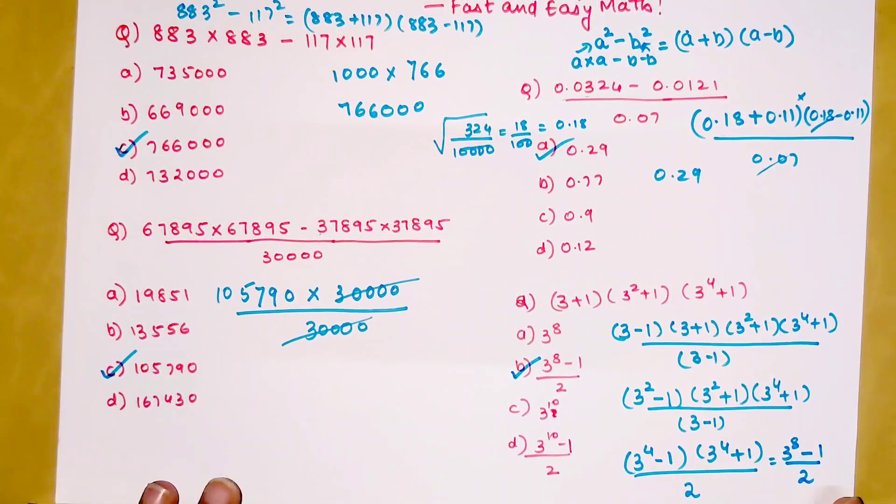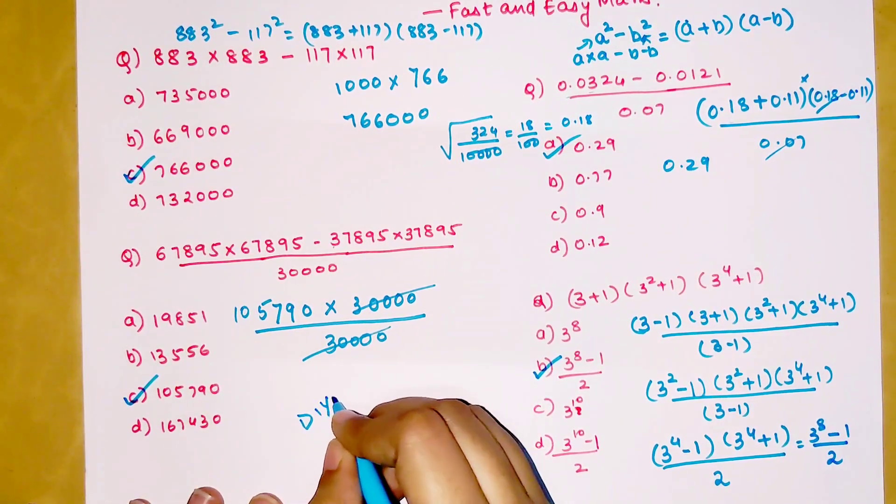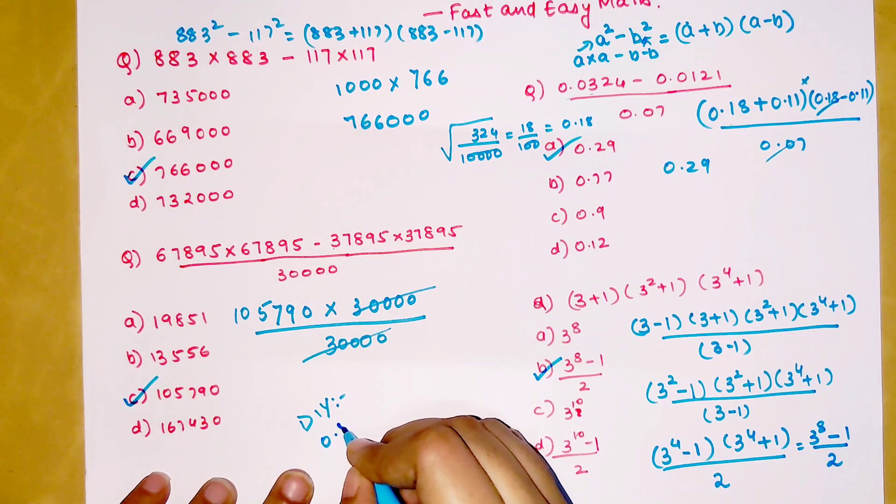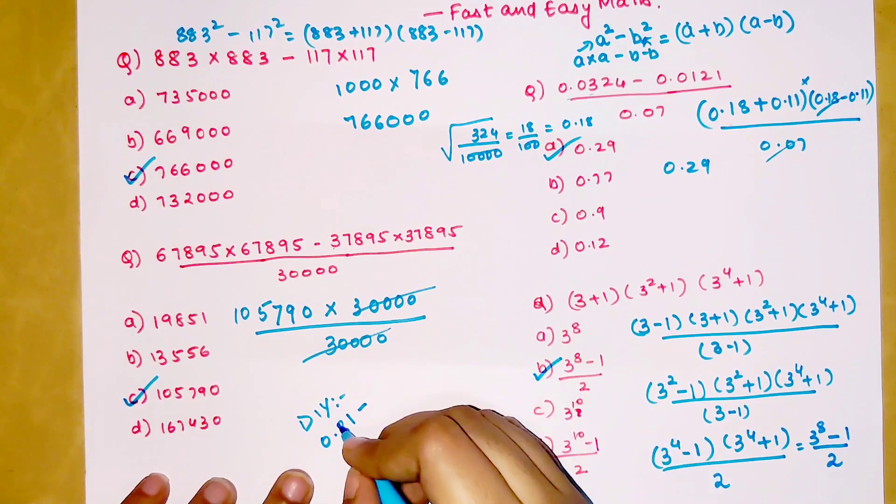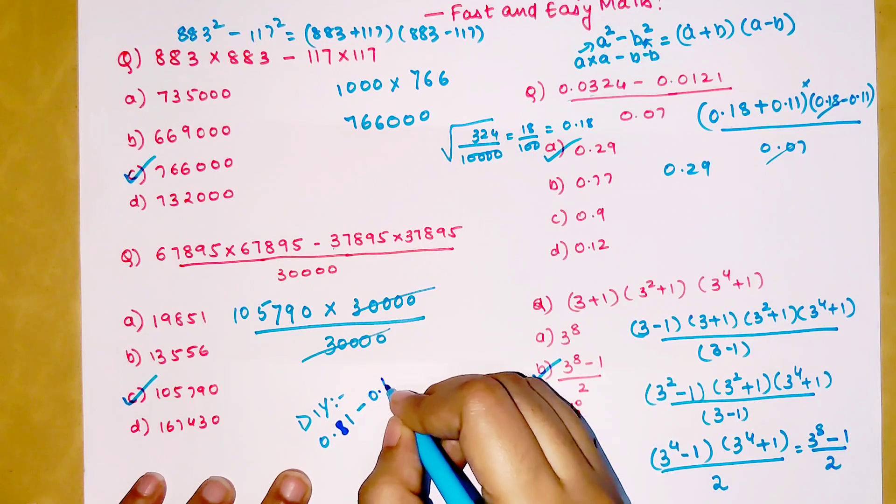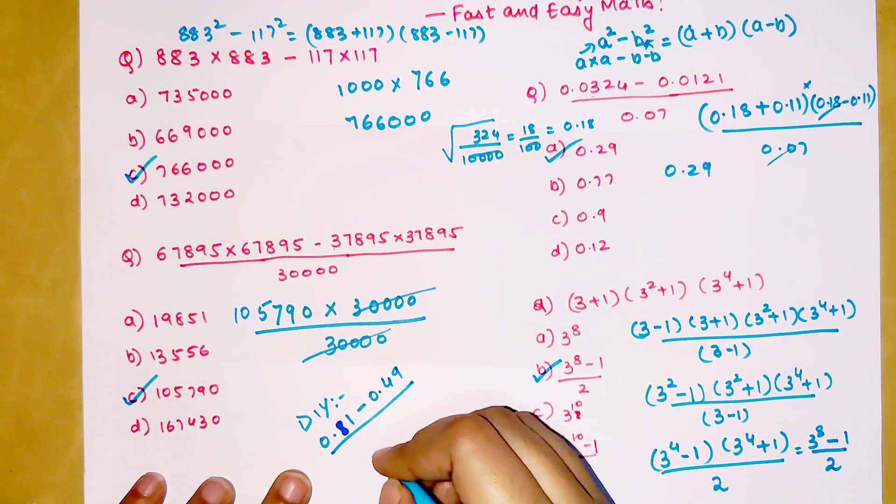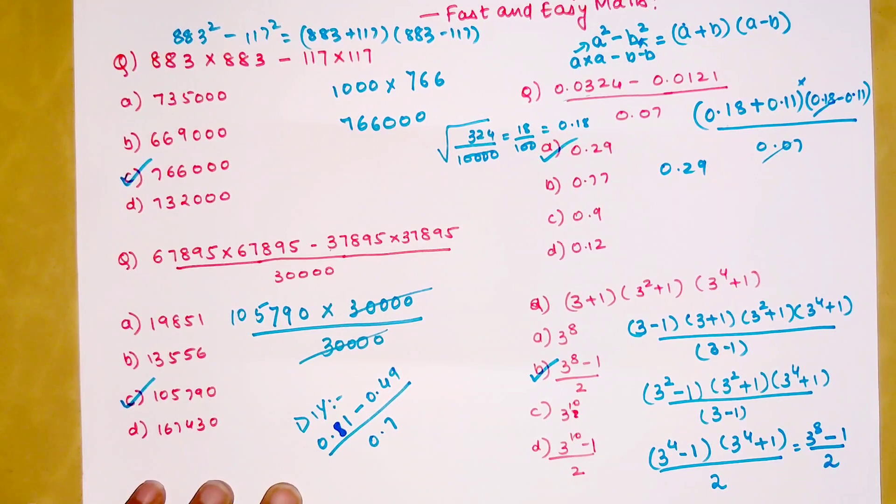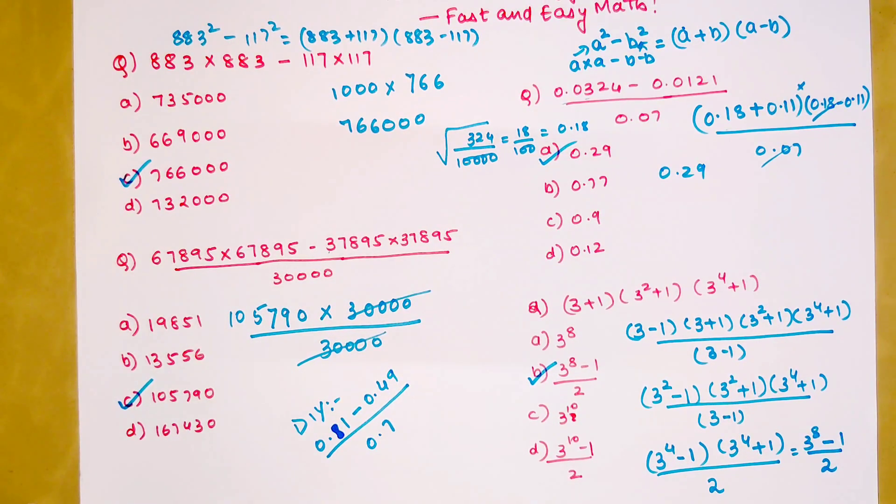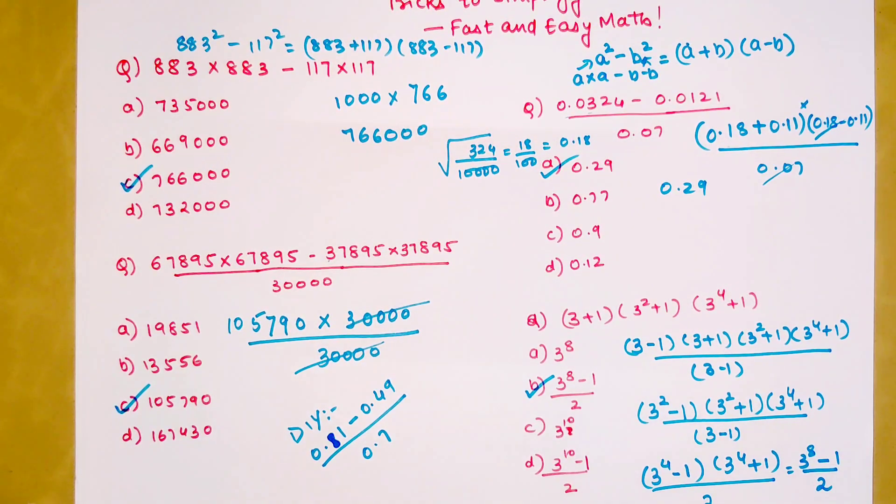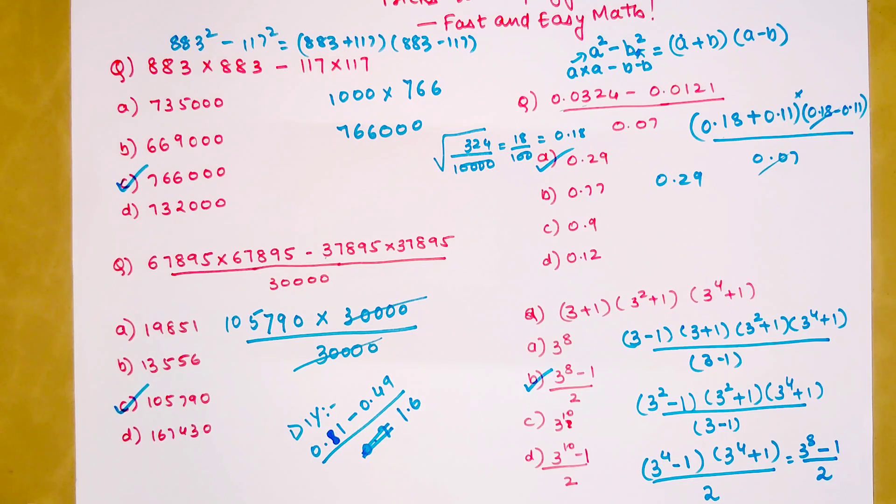Now coming to your DIY today, I'm going to put up a decimal question for me to understand whether the decimal concept is clear or not. If it is not, then I will definitely make a video on it. The problem is 0.81 - 0.49 upon 0.7. Sorry, this was getting divided by 1.6. Do let me know your answers in the comment section.